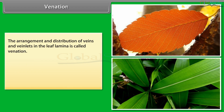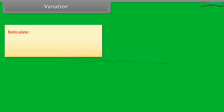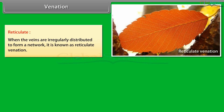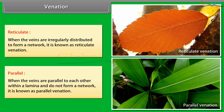The arrangement and distribution of veins and veinlets in the leaf lamina is called venation. The two main types of venation are reticulate and parallel. In reticulate venation, the veins are irregularly distributed to form a network. In parallel venation, the veins are parallel to each other within the lamina and do not form a network.